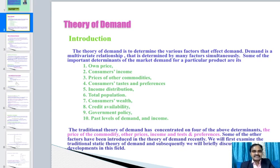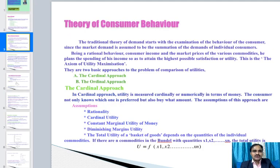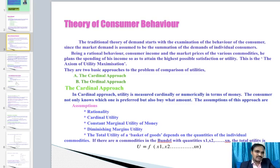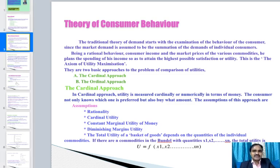The traditional theory of demand starts with the examination of the behavior of the consumer, since market demand is assumed to be the summation of the demands of individual consumers. Being a rational consumer, they allocate their income across market prices of various commodities so as to attain the highest possible satisfaction or utility.